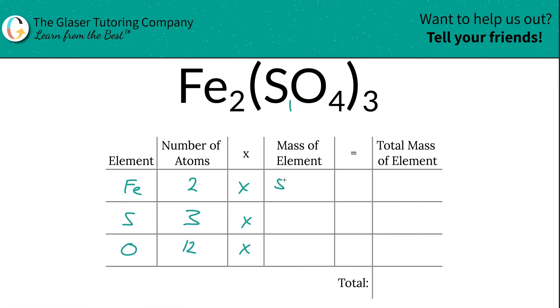So for iron here we have 55.85, the sulfur mass is about 32.07, and then oxygen is going to be 16.